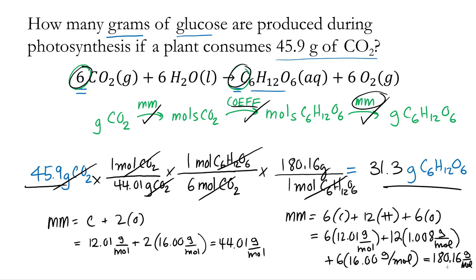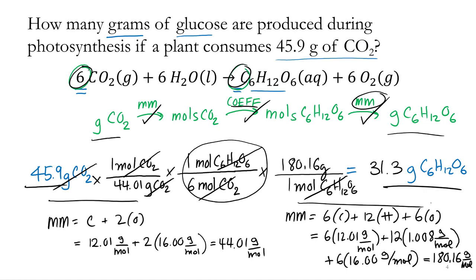So that's a mass-to-mass conversion: starting with grams of CO2 and ending with grams of glucose. The only new thing we're doing is using the coefficients of the balanced chemical equation to convert from one substance to another — CO2 to glucose. We already knew how to convert grams to moles and moles to grams, and putting them together is a stoichiometric calculation involving a chemical equation.